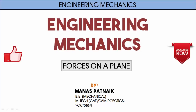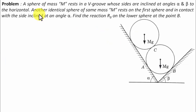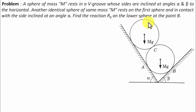Hi there guys, hope you're doing well. This is your friend and tutor Manus. A sphere of mass m rests in a V-groove whose sides are inclined at angles alpha and beta to the horizontal. Another identical sphere of mass m rests on the first sphere and in contact with the side inclined at angle alpha. Find the reaction RB on the lower sphere at point B.